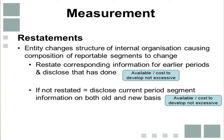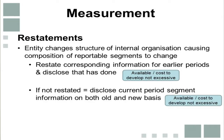On restatements, when an entity changes its internal organisational structure so that the segments change, the corresponding prior year information needs to be restated if available or if it can be determined without incurring excessive costs. If the information is not available or would be excessively expensive to restate, it does not need to be restated, but the requirement is then for current year information to be presented on both the old and the new basis — again if available and determinable without excessive costs. If presenting on both bases would also be excessively expensive, that fact must be disclosed.